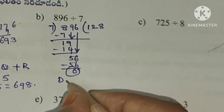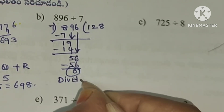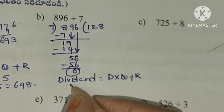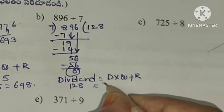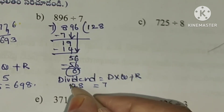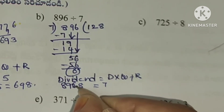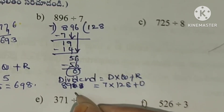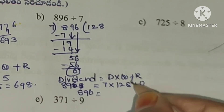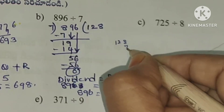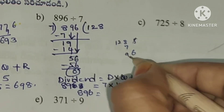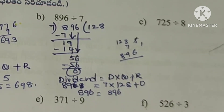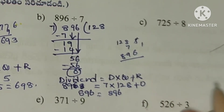Checking: dividend equals divisor into quotient plus remainder. 896 equals 7 into 128 plus 0. 7 eights are 56, 7 twos are 14 plus 1 is 15, 7 ones are 7 plus 8 is 15. So 896 equals 896.